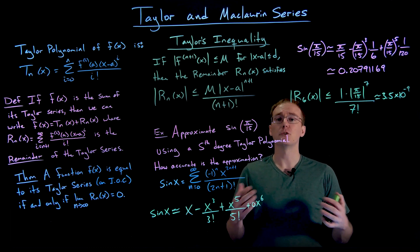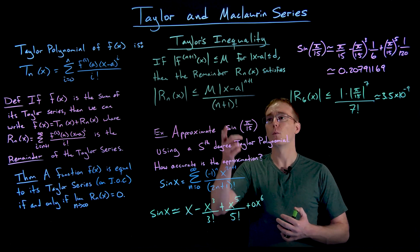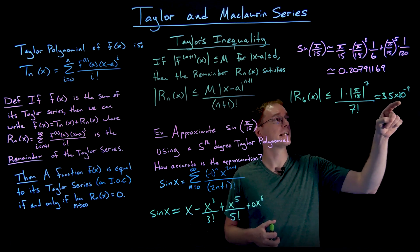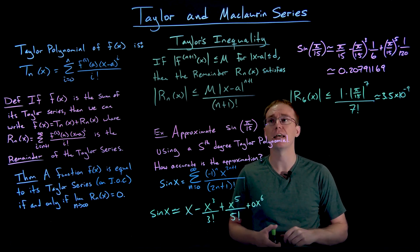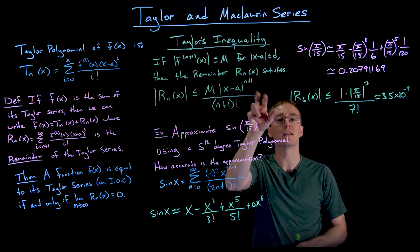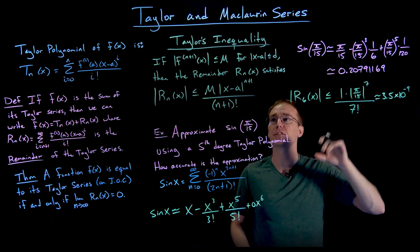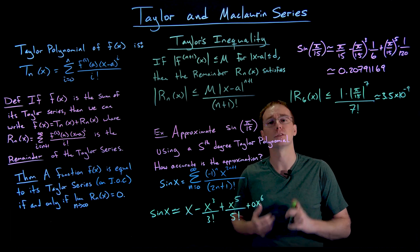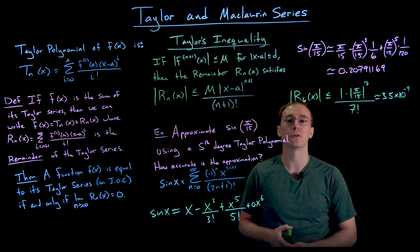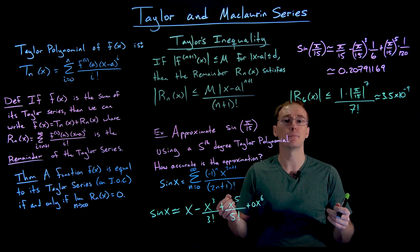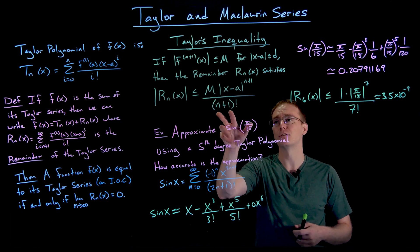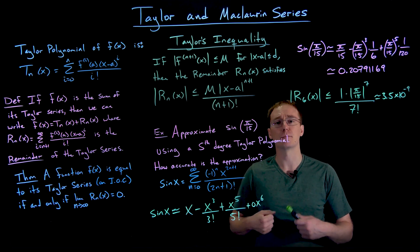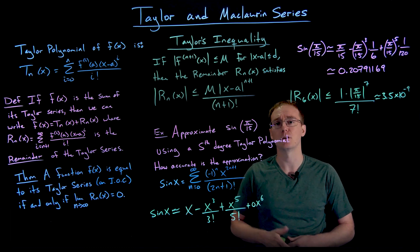A variation of this problem is to figure out what value of n is needed for a desired accuracy, such as 10⁻¹⁰ or 10⁻¹². You'd set up the Taylor's inequality expression to be less than the required accuracy, then plug in values of n until the left-hand side becomes small enough. Sometimes you can solve these inequalities algebraically, but when they involve factorials it's usually hard or impossible to solve algebraically, so you just test n values until you find one that works.